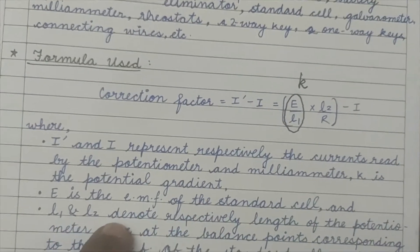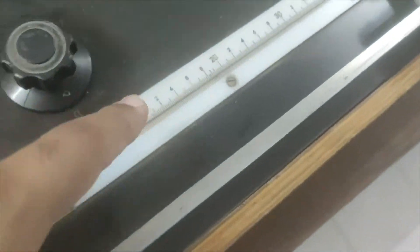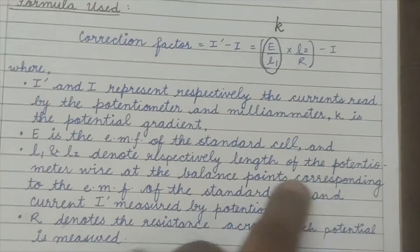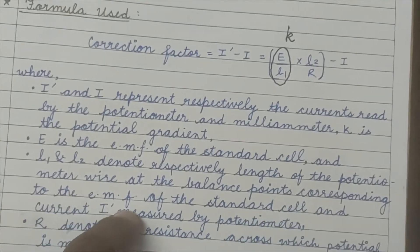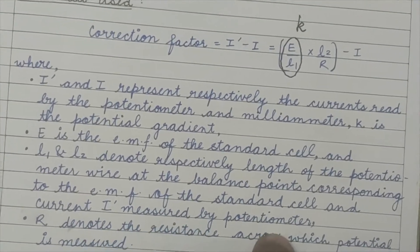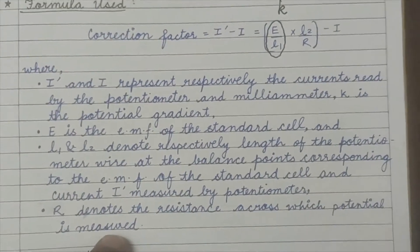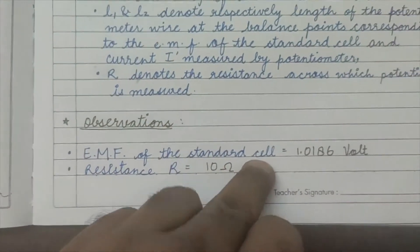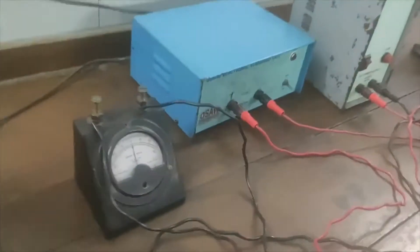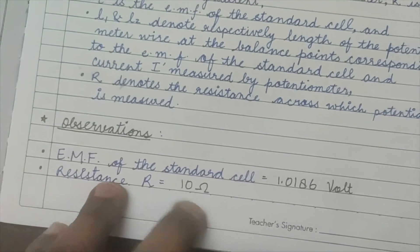E is the EMF of the standard cell, and L1 and L2 denote respectively the balancing length corresponding to the EMF of the standard cell and to the current I'. R is the resistance across which the potential is measured, which is 10 ohm in our case. The standard cell EMF we are using is 1.0186 volts.